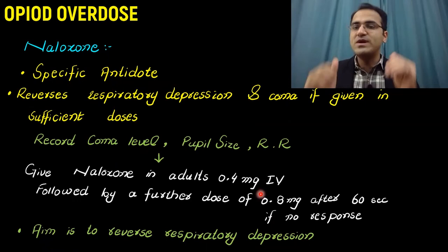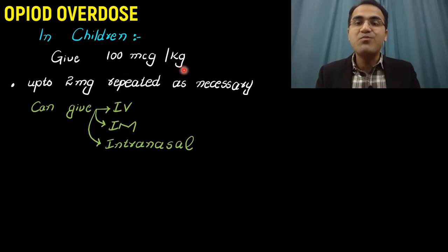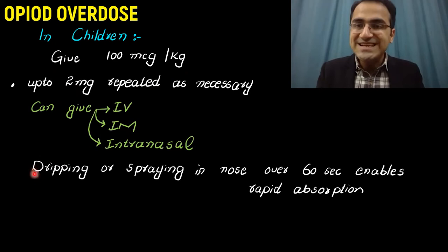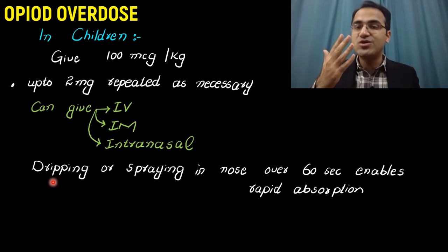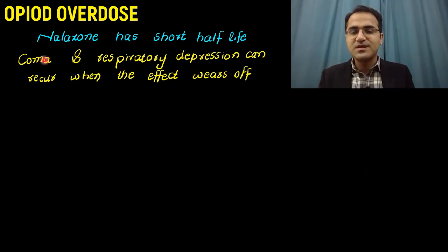In children, naloxone is given as 100 micrograms per kg up to 2 mg, repeated as necessary. It can be given IV, IM, or intranasally. Intranasal administration is done by dripping or spraying naloxone into the nose over 60 seconds, enabling rapid absorption through the nasal mucosa.